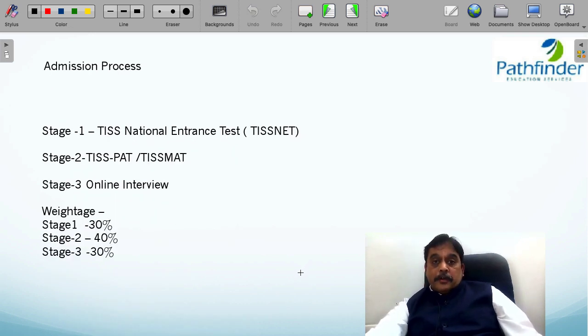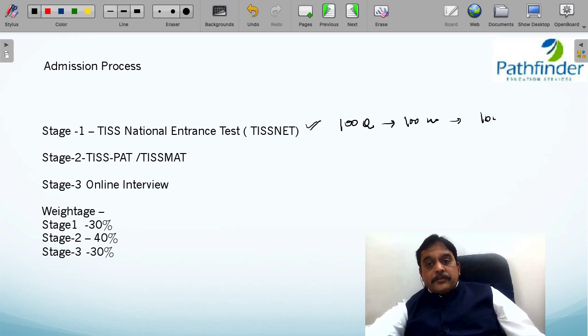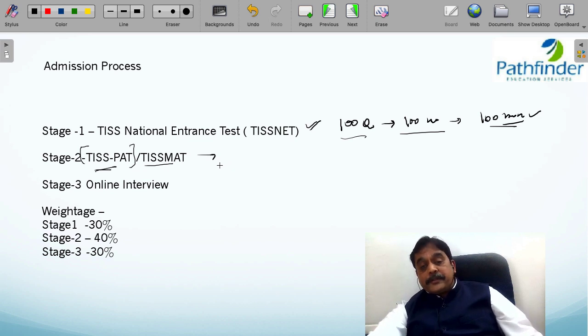Next, about the TISS admission process. TISS has almost standardized and formalized the admission process. In the first stage, you have to give the TISS national entrance test. This test has 100 questions worth 100 marks to be solved in 100 minutes. There is no negative marking, so that is one advantage. This is stage 1. If you qualify stage 1, you will be invited for stage 2, depending on the number of programs you have applied for. If you've applied for 2 programs, you have to give 2 TISS PATs, program aptitude tests. For people who have applied for labor relations and management programs, they will have to appear for TISS MAT, the TISS management aptitude test. This test is of 45 minutes duration with 35 questions.